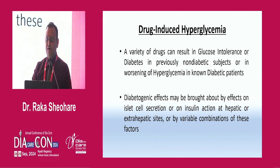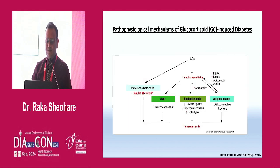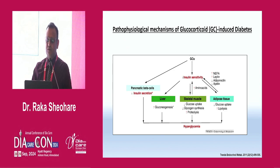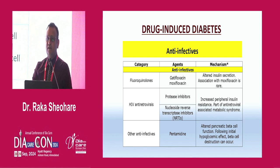How do glucocorticoids cause hyperglycemia? They decrease insulin secretion from pancreatic beta cells, decrease insulin sensitivity, and affect leptin and adiponectin pathways — an orchestra of gluconeogenesis, decreased glucose uptake in adipose tissue, increased lipolysis, and ultimately hyperglycemia. Drug-induced diabetes in antibiotics — fluoroquinolones, HIV antiretrovirals, and other anti-infective drugs — have also been associated, through different mechanisms.